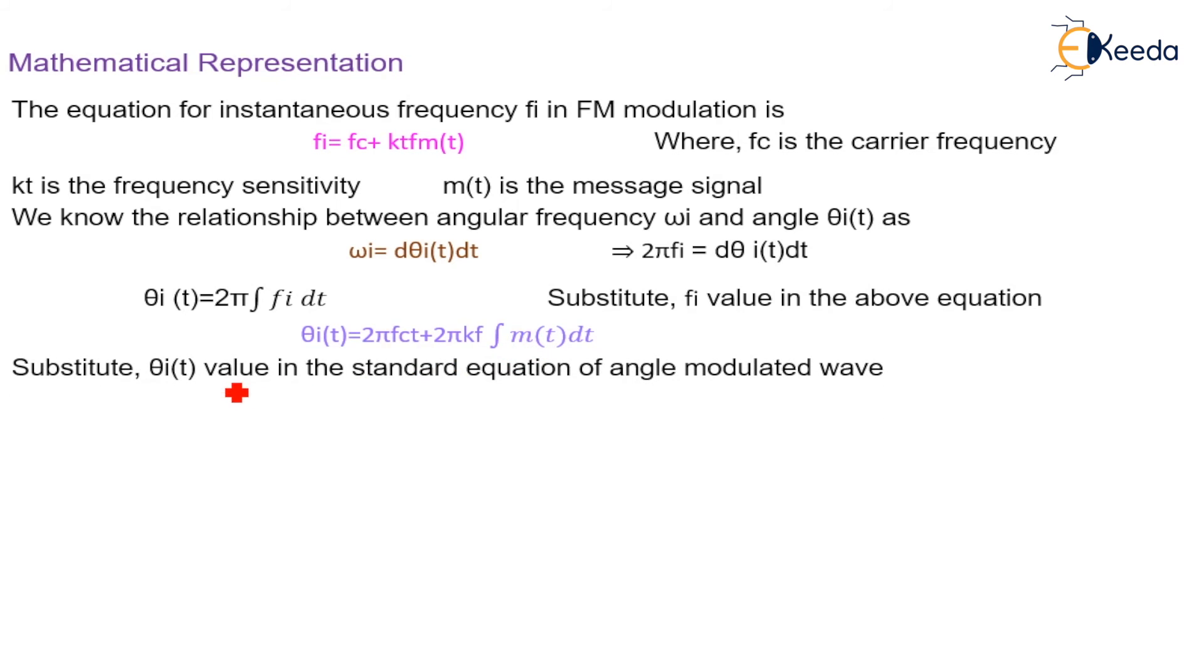Substituting θi(t) value in the standard equation of angle modulated wave, we will get s(t) equal to Ac cos(2π fc t plus 2π kf integration of m(t) dt). And this is the equation of FM wave.